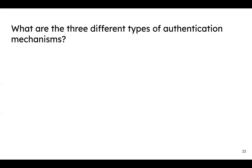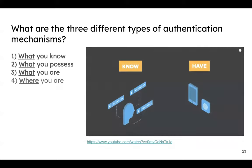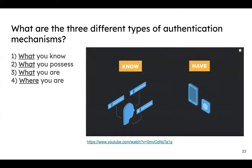The next question asks for three types of authentication mechanisms. I remember them as the three what's and a where: what you know, what you have, what you are, and where you are. Think of two-factor authentication — you know your password, you possess your phone which receives a secondary code. The third is what you are: biometrics or CAPTCHA to prove you're human. And where you are: IP tracking or geolocation.